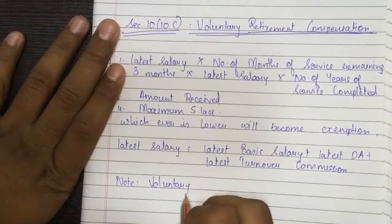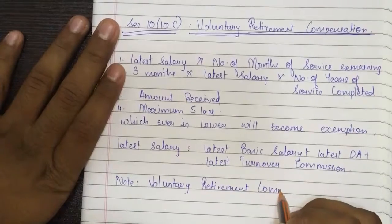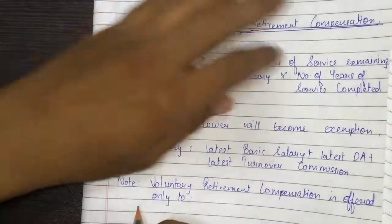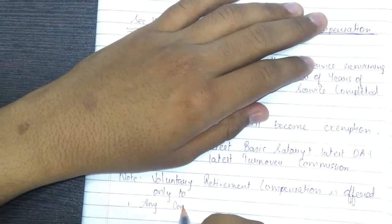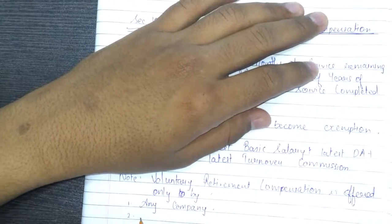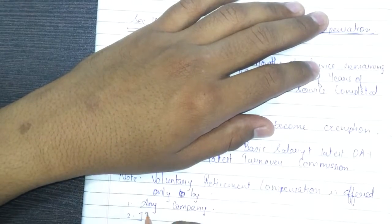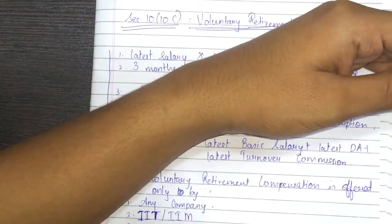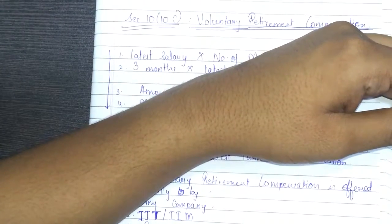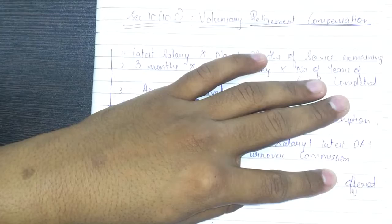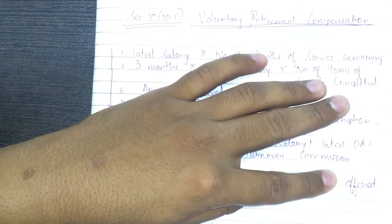Please note: voluntary retirement compensation is offered only by specific entities — any company, IIT, IIM, cooperative society, local authority, and approved institute or university.